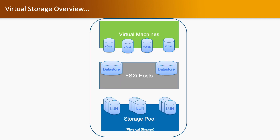Now, overview of virtual storage. We have three layers. On the bottom layer, we have storage pools, which have a bunch of disks available. Using that bunch of disks, we create LUNs and assign those LUNs to the ESXi host. Using those LUNs, the ESXi host creates datastores. And from those datastores, it assigns some space to the virtual machines in the form of virtual disk, which is known as vDisk.